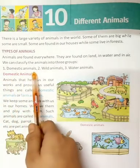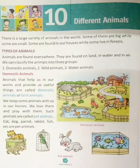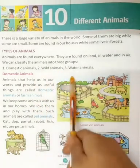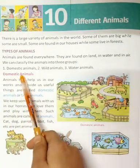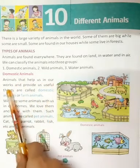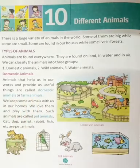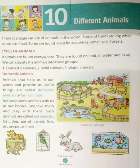First is domestic animals. Domestic means household, or those which we can domesticate and breed. Animals that help us in our work and provide us useful things are called domestic animals or farm animals.